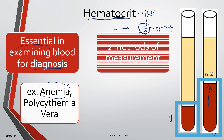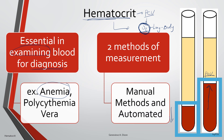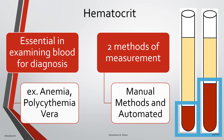There are two different methods in measuring hematocrit: manual methods and automated methods. These two types of methods will be described in another video.